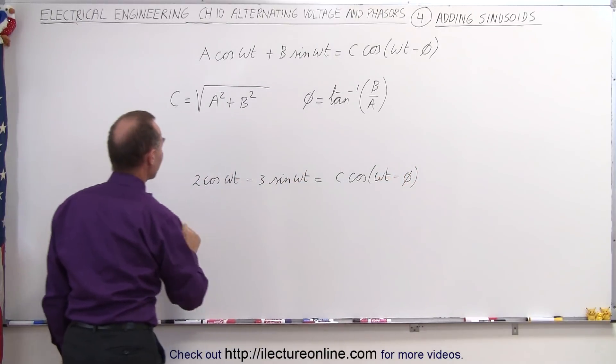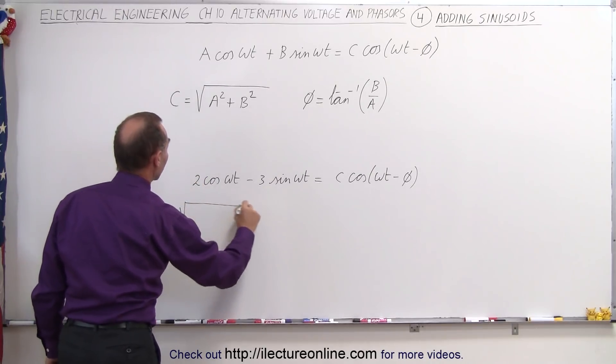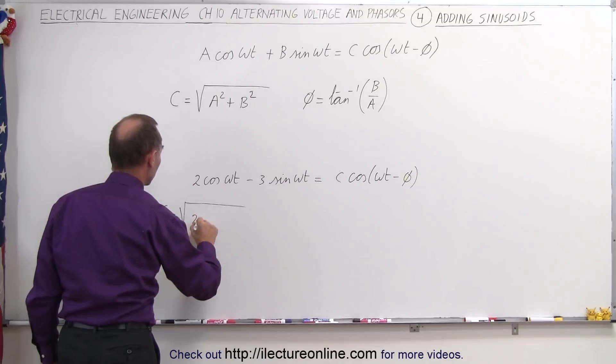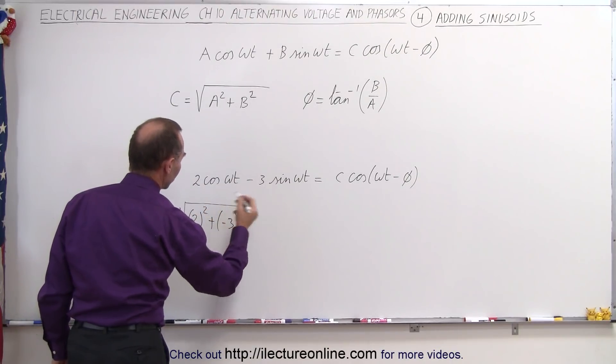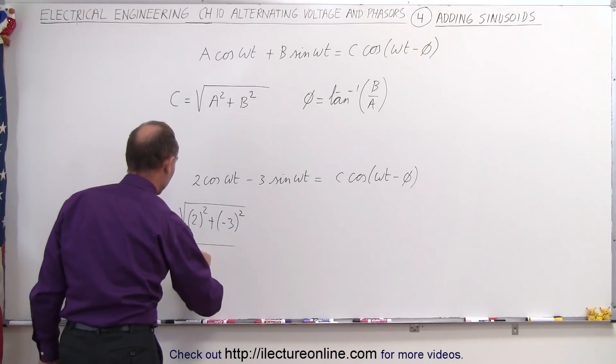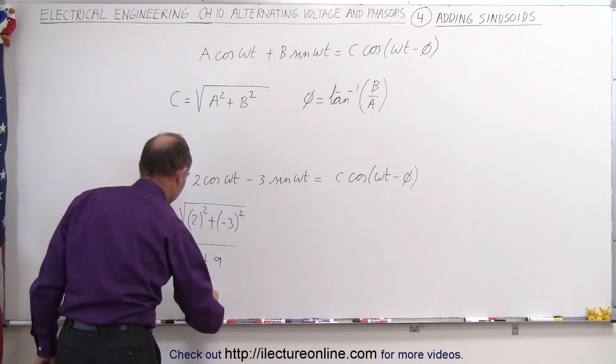So first, we need to find C. And C is going to be equal to the square root of A squared plus B squared. Well, A is 2 and B is negative 3, but since we're squaring it, the sign doesn't matter. So this will be equal to 4 plus 9, which is equal to the square root of 13.